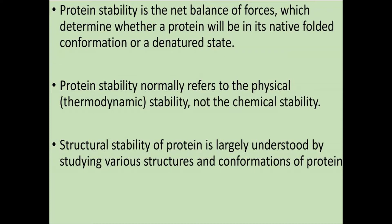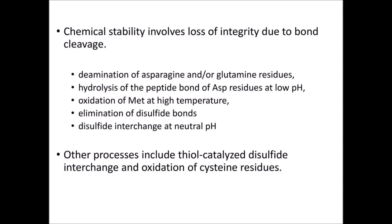Chemical stability involves loss of integrity due to bond cleavage, deamination of asparagine and/or glutamine residues, hydrolysis of the peptide bond of asparagine residues at low pH, oxidation of methionine at high temperature, elimination of disulfide bonds, and disulfide interchange at neutral pH. Other processes include thiol-catalyzed disulfide interchange and oxidation of cysteine residues.